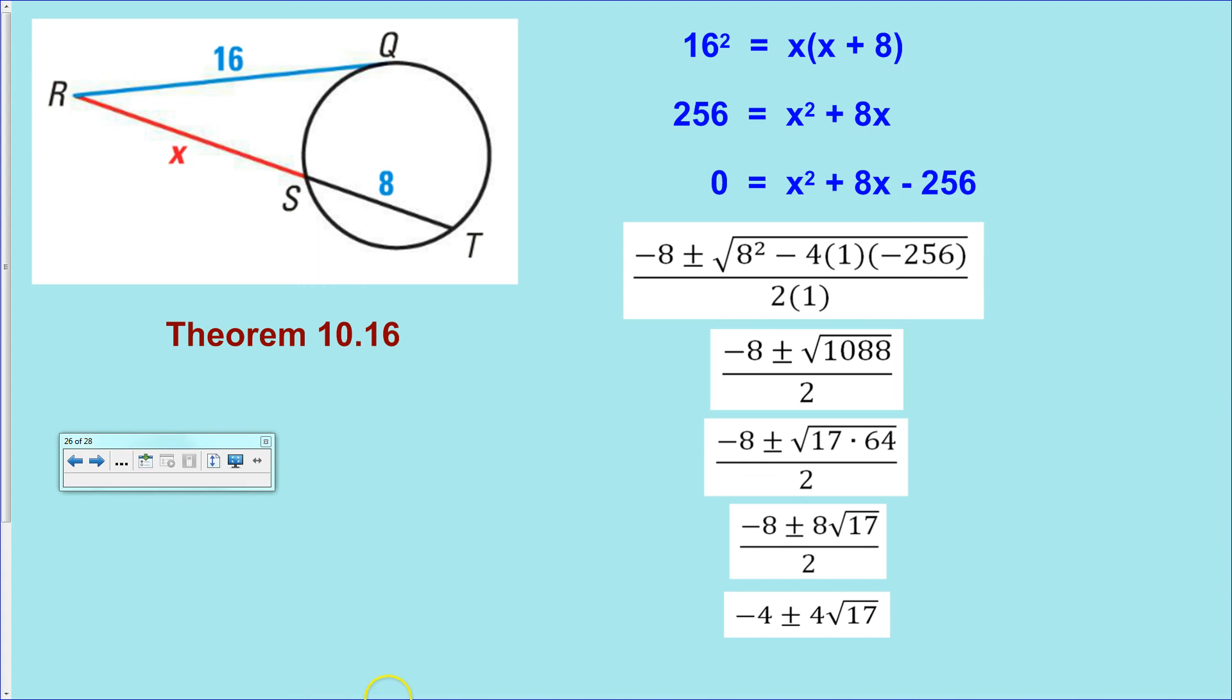But again, we have an x over here. And if I took negative 4 minus some number, I would get a negative number, and I can't have a negative length. So the only solution must be the positive solution, negative 4 plus 4 times the square root of 17.